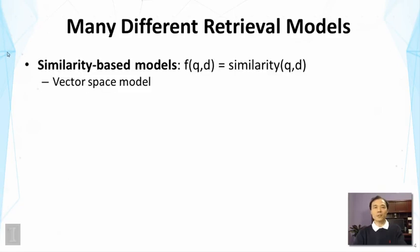First, one family of the models are based on the similarity idea. Basically, we assume that if a document is more similar to the query than another document is, then we will say the first document is more relevant than the second one. So in this case, the ranking function is defined as the similarity between the query and the document. One well-known example in this case is vector space model, which we will cover more in detail later in the lecture.